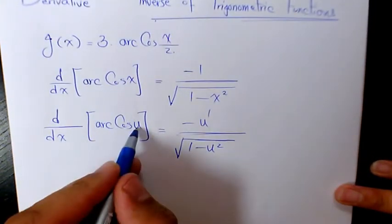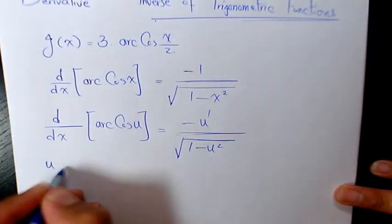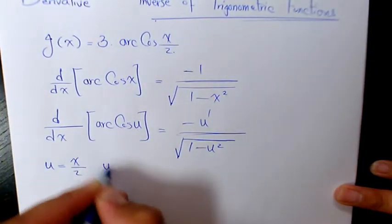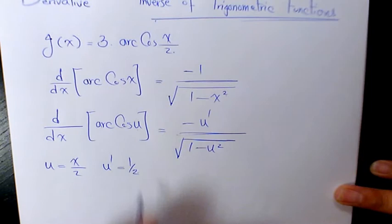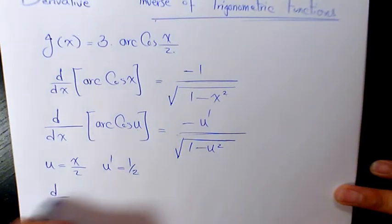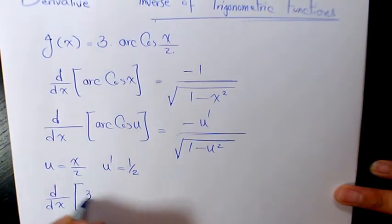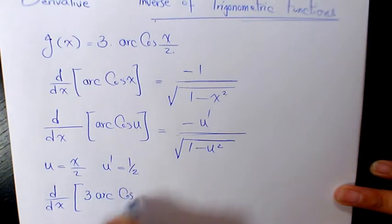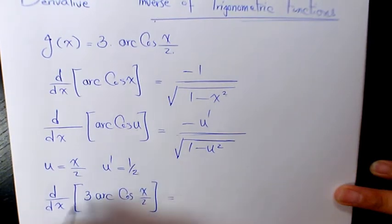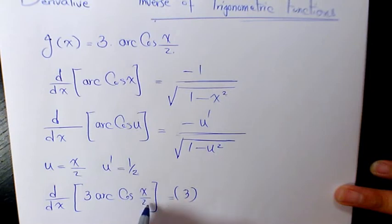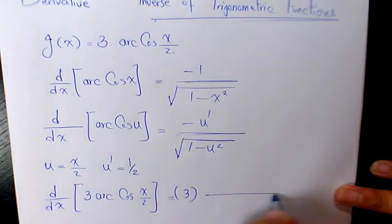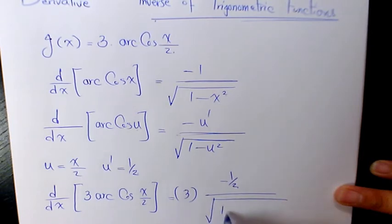In this case u is x over 2, so u prime is going to be 1 over 2. So we can say the derivative of 3 arc cosine of x over 2 will be 3 times the derivative of arc cosine x over 2, which is negative 1 over 2, over square root of 1 minus u squared, which is x over 2 squared.